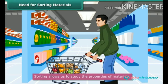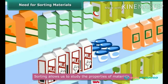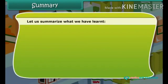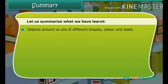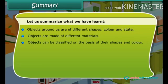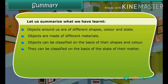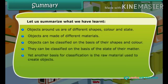So, if you have any doubt or any issue in understanding any of the content we discussed today, you are free to ask. Once again, to summarize: objects around us are of different shapes, colors, and states. Objects can be classified on the basis of their shapes, colors, state of matter, and the raw materials used to create them. Sorting objects allows us to locate them easily and to study their properties.